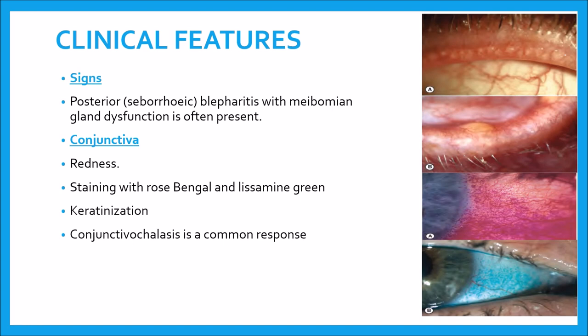Signs include posterior seborrheic blepharitis, as shown in this picture — you can see the oil droplet signs here — and it is often present with meibomian gland dysfunction. In the conjunctiva there is redness and conjunctival membrane involvement.